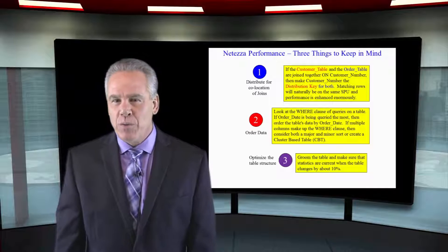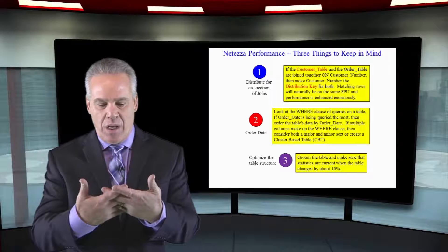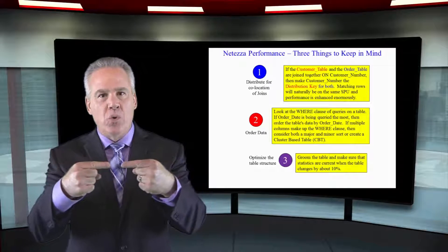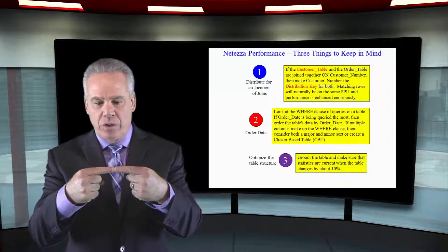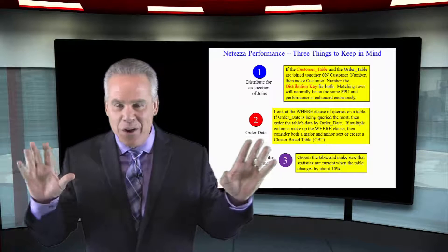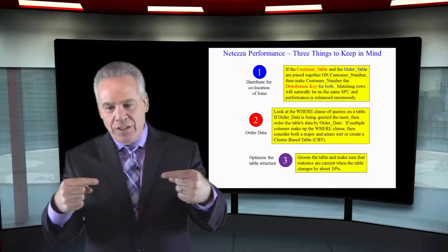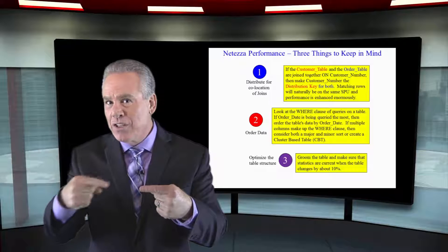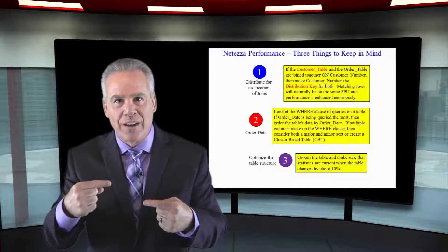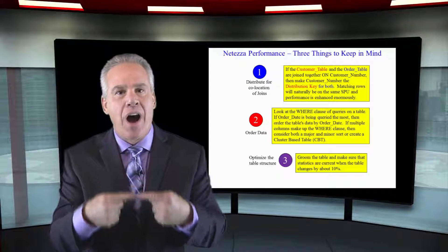You pick a distribution key that will help when you join tables together. When two rows are going to be joined from two separate tables, those rows physically have to be on the same SPU. That's probably not going to happen very often naturally — and if it doesn't, Netiza will redistribute one of those rows based on the hash formula to make it happen, so those rows land temporarily on the same SPU.